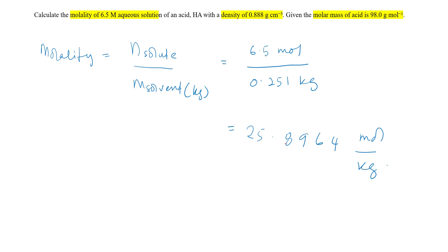What is the final answer with the fewest significant figures? Because the question gives the lowest significant figure as 6.5 (two significant figures), we round the answer to 25.9 mol per kg.